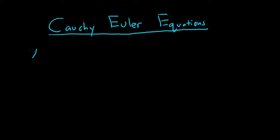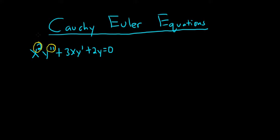Here's an example of a Cauchy-Euler equation: x squared y double prime plus 3xy prime plus 2y equals 0. The reason this is a Cauchy-Euler differential equation is because the power of x matches the order of the derivative. Here the power of x is 2, and the order of the derivative is 2. Here the power of x is 1, and the order of the derivative is 1. You can think of there being an x to the 0,